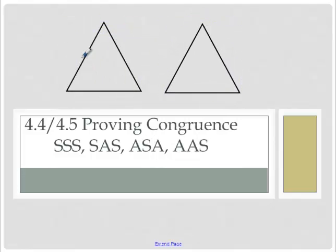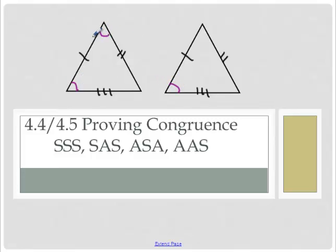We were able to mark this side congruent to this side, this one congruent to this one, and so on. Every piece of this triangle, including the angles — this angle was congruent to this one, top angle congruent to top angle. All of the angles and all of the sides of congruent triangles are congruent.